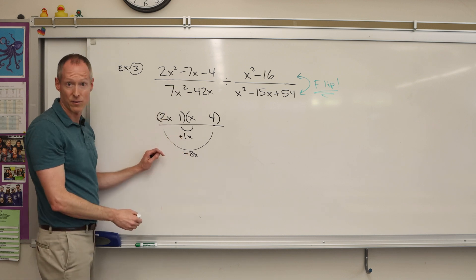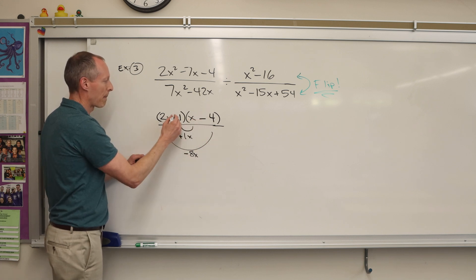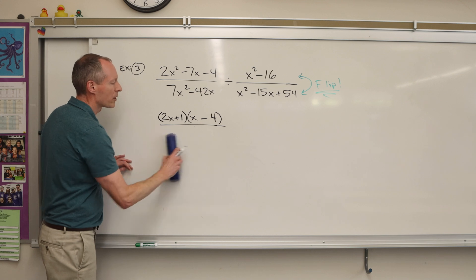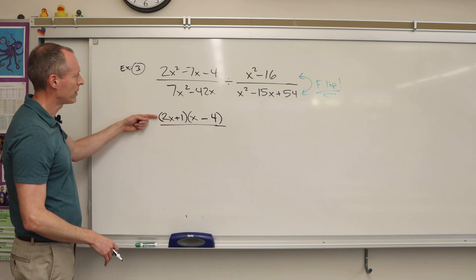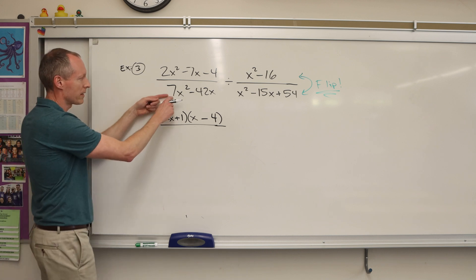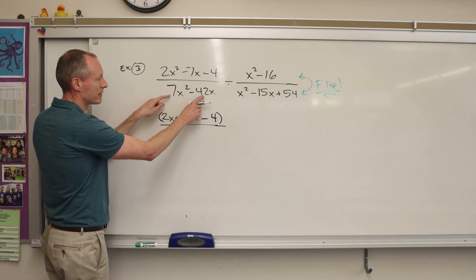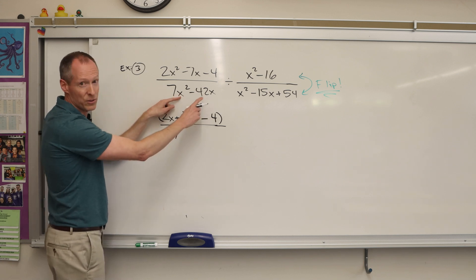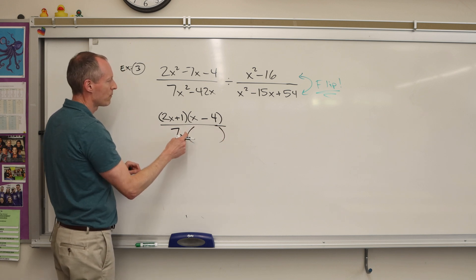So you can always check yourself as you're factoring using foil. So once we know we have that correct, then we go on to the next one. And down here, you always want to look for a greatest common factor. And I see seven goes into both those. So sometimes a number, but they also both have an x. So we take out the x.